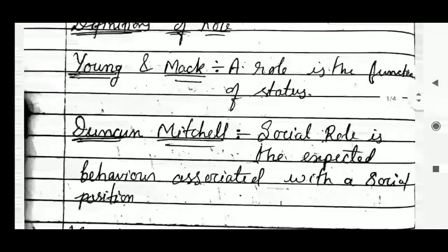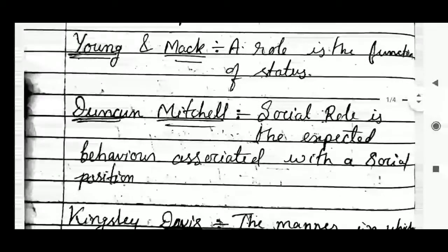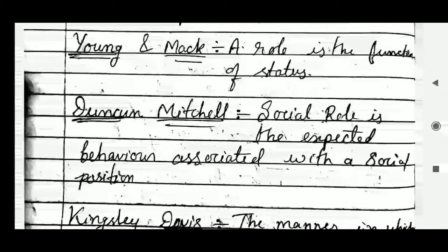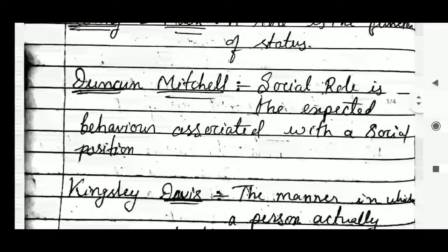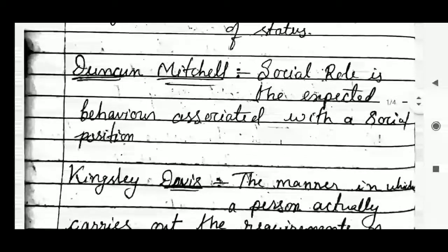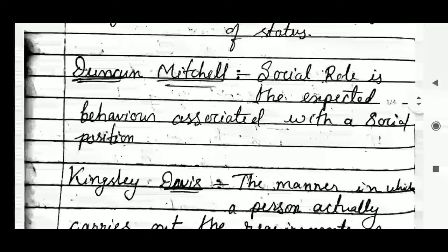The second definition is given by Duncan Mitchell. According to him, social role is the expected behavior associated with a social position — the social role is a kind of expected behavior which is associated with a social position.